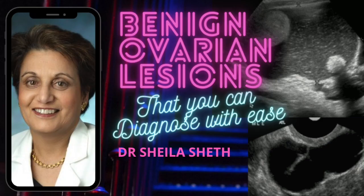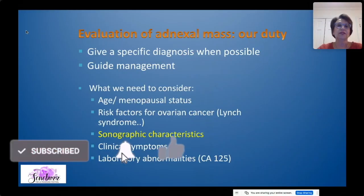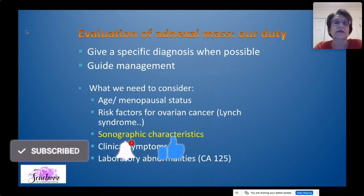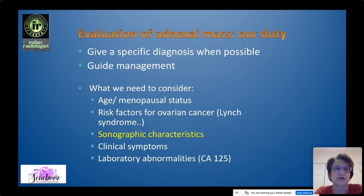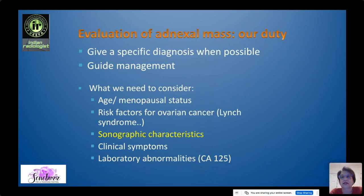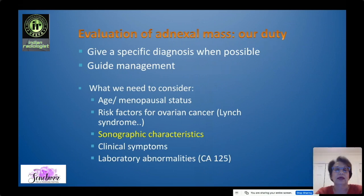Our duty is to give a specific diagnosis when possible because this really helps guide management. What we need to consider, in addition to the sonographic characteristics, is the age and menopausal status of the woman, potentially a risk factor for ovarian cancer such as familial history of ovarian cancer or Lynch syndrome, clinical symptoms, and lab abnormalities such as CA-125. We really need to have a global picture of the patient.